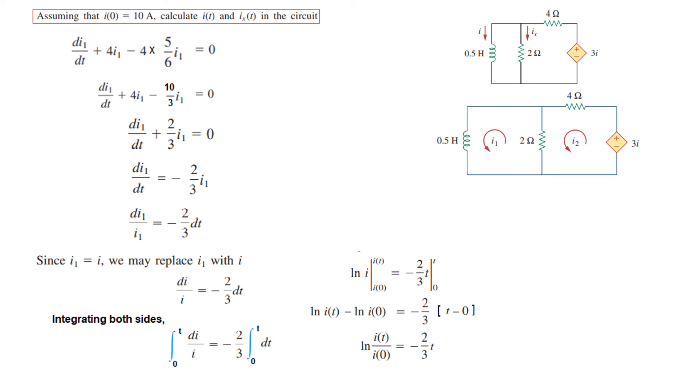By integrating, the left-hand side will become log of I with these two limits, and similarly the right-hand side will be -2/3, and integral of dt gives t. Putting the limits, we get log I(t) - log I₀ = -2/3 t. We can write it as ln(I(t)/I₀) = -2t/3.